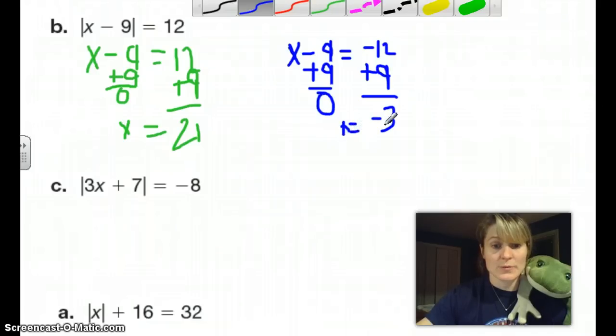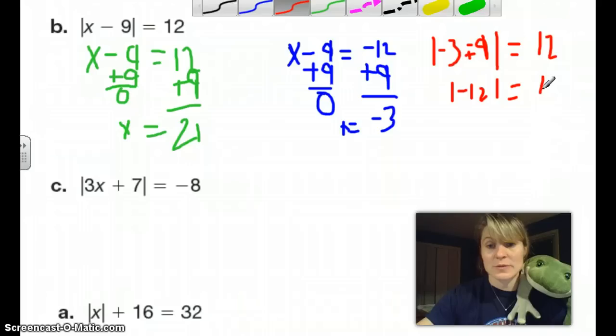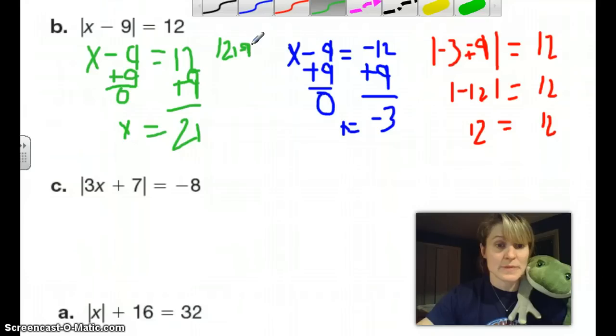Just to prove to you that this works, if we were to plug negative 3 in here for x, we would have the absolute value. x is negative 3 minus 9 is equivalent to 12. Negative 3 minus 9 equals negative 12. The absolute value of negative 12 is 12. So 12 does equal 12. I can do the same thing over here. I take 21 and minus 9 in the absolute value brackets, and that equals 12. 21 minus 9 is 12, so we have the absolute value of 12 equals 12. Absolute value of 12 is 12. Everything becomes positive. It's not one thing or the other, but whatever's inside is positive.